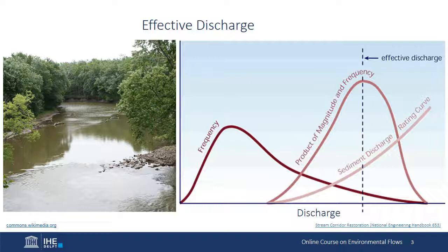The final curve plots the product of sediment discharge magnitude and frequency. The highest point on this curve is called effective discharge — the single discharge responsible for transporting the most sediment. Lower flows occur more frequently but transfer less sediment overall, while higher flows transport more sediment per unit time but occur less frequently, so they also transport less sediment than the effective discharge. Like bankfull flow in hydraulics, effective discharge is quantified for many rivers and used as a standard for comparison.